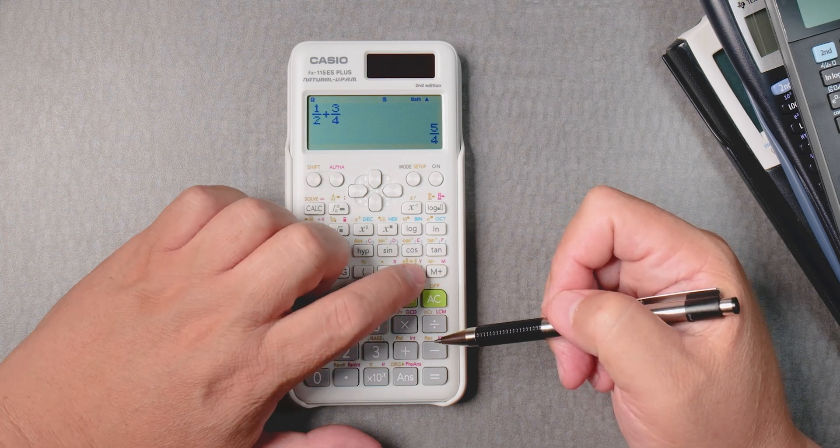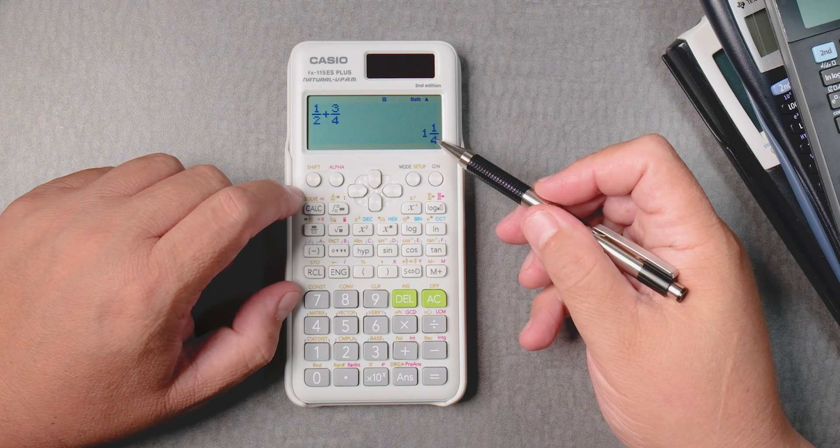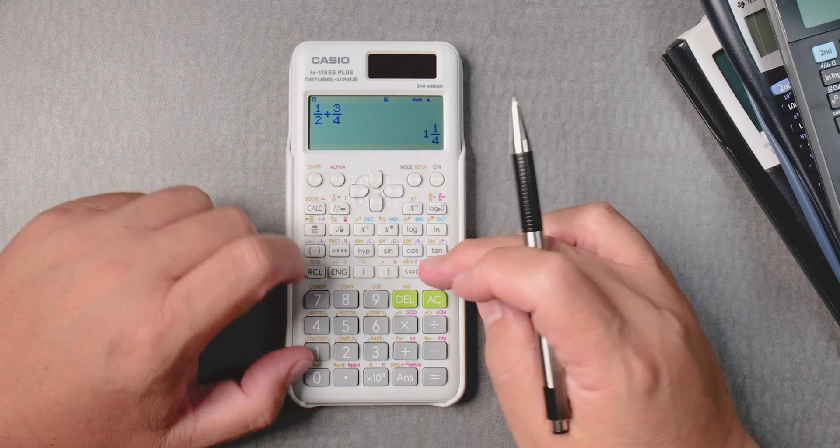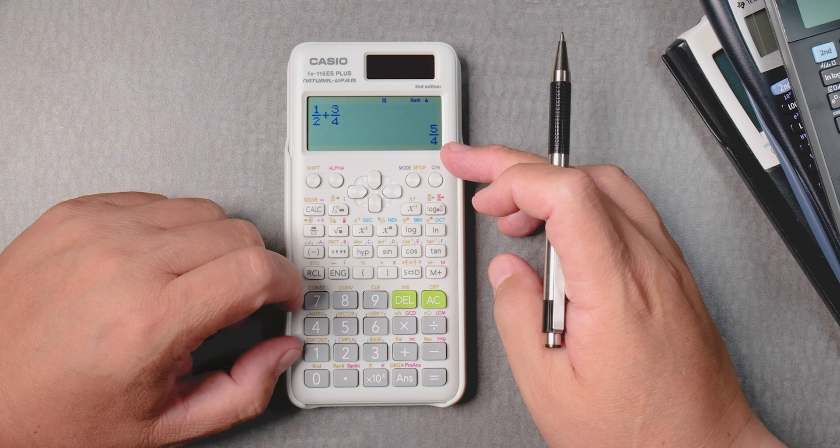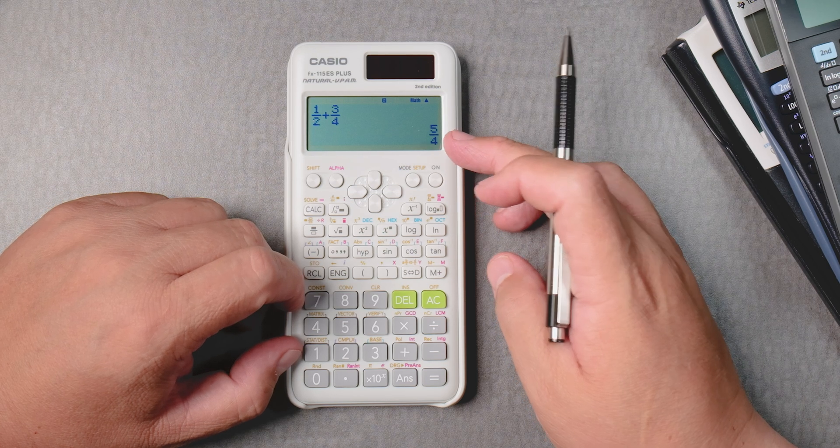Shift, SD button. Now it gives you an improper fraction. Shift, SD button brings you to that mixed number into an improper fraction.